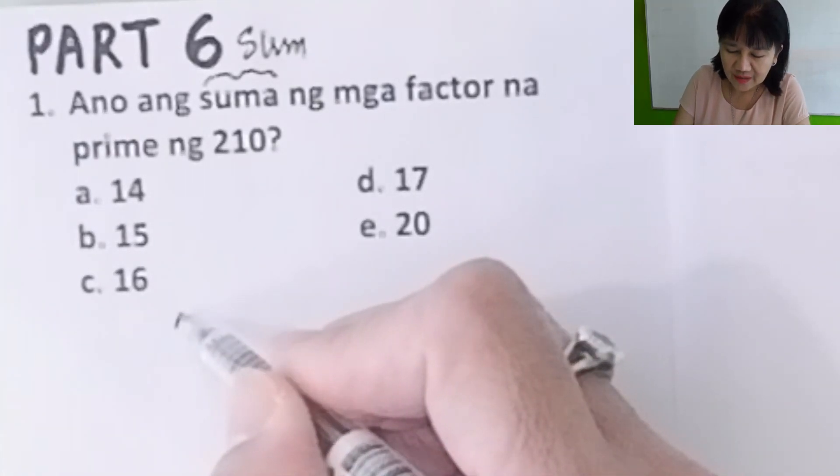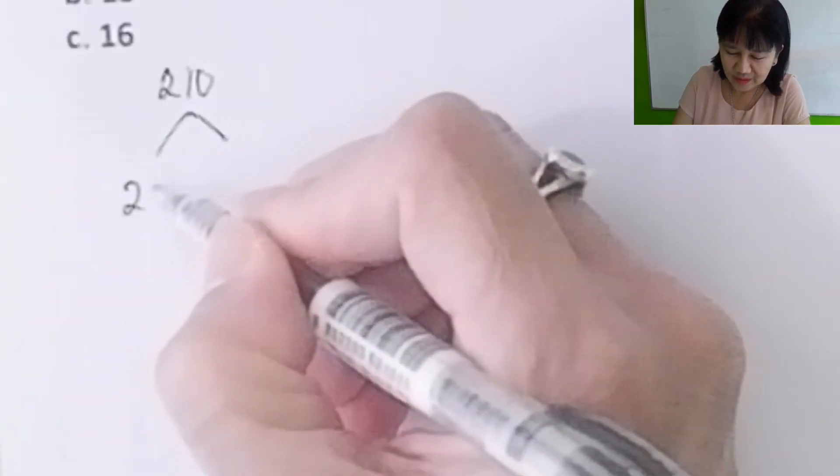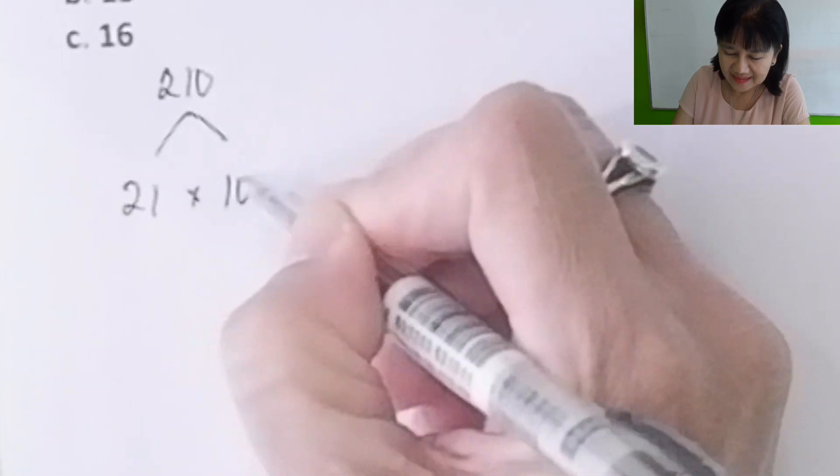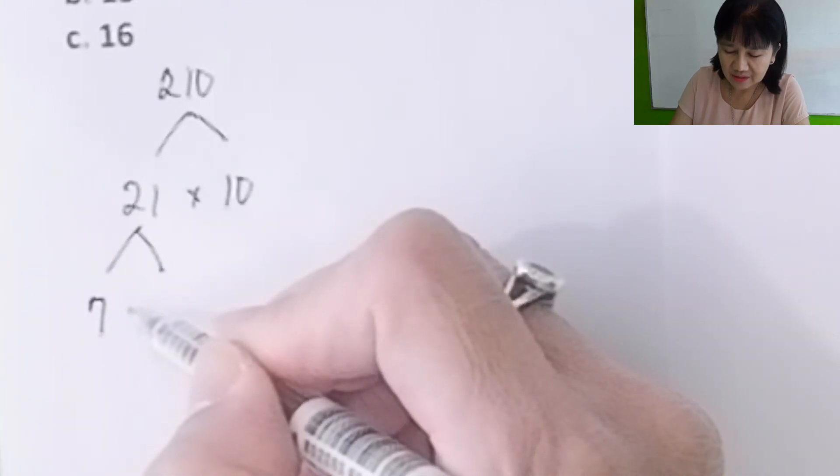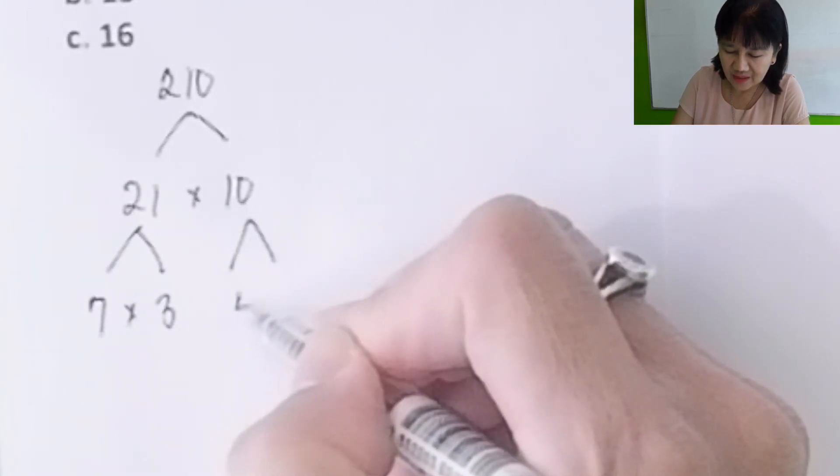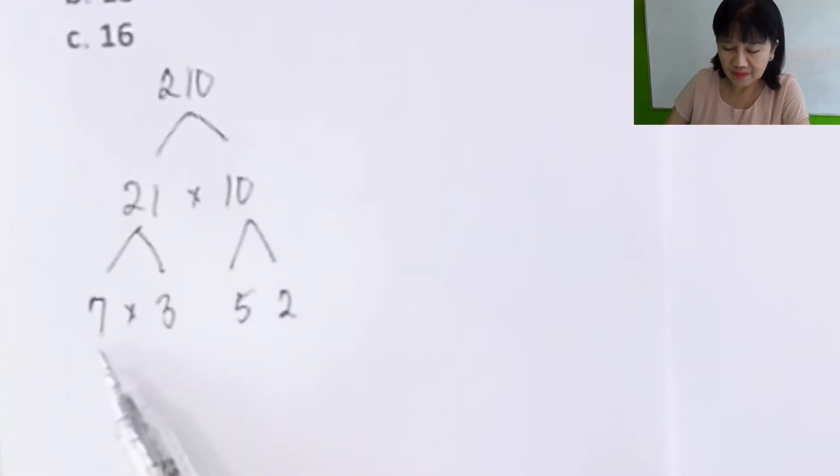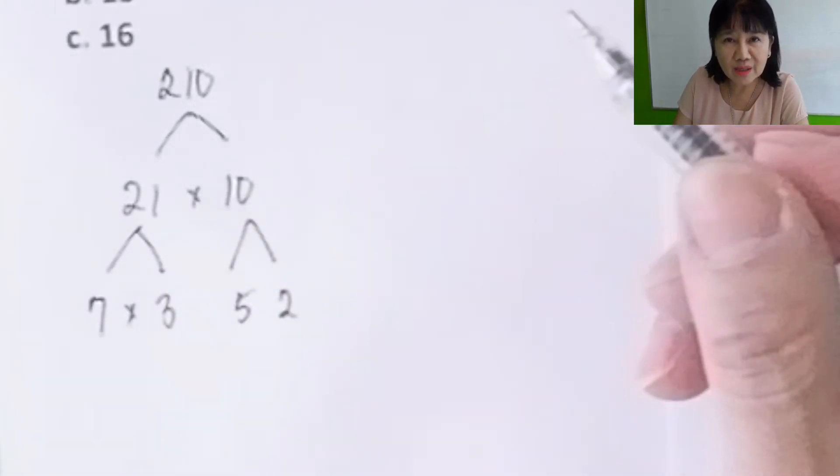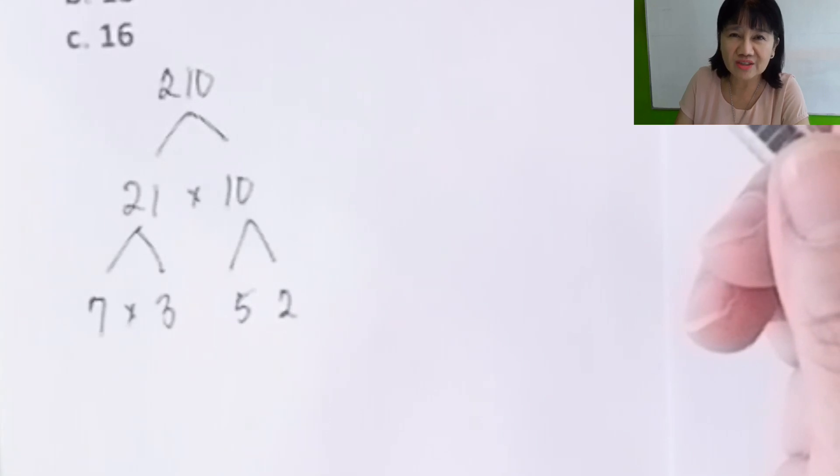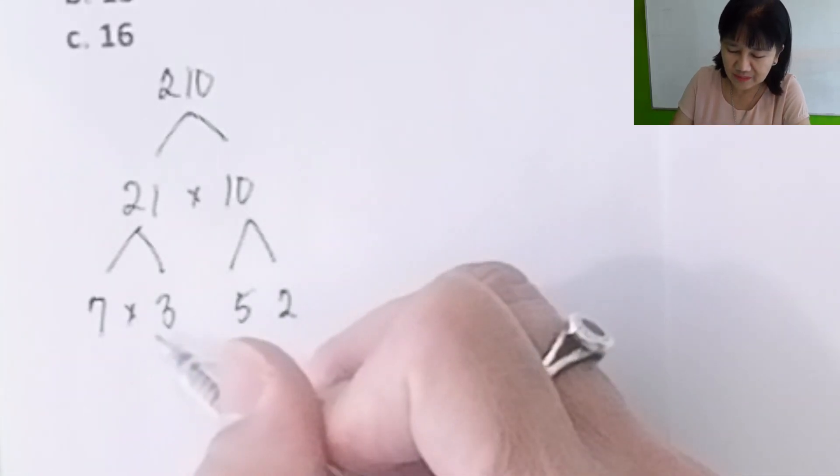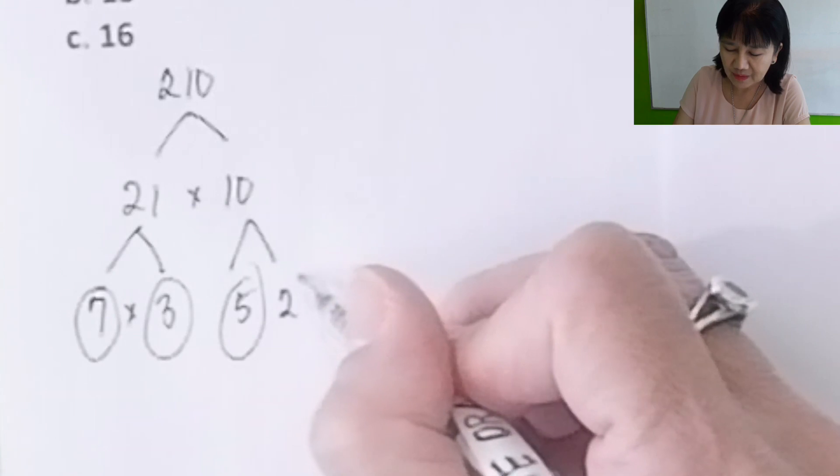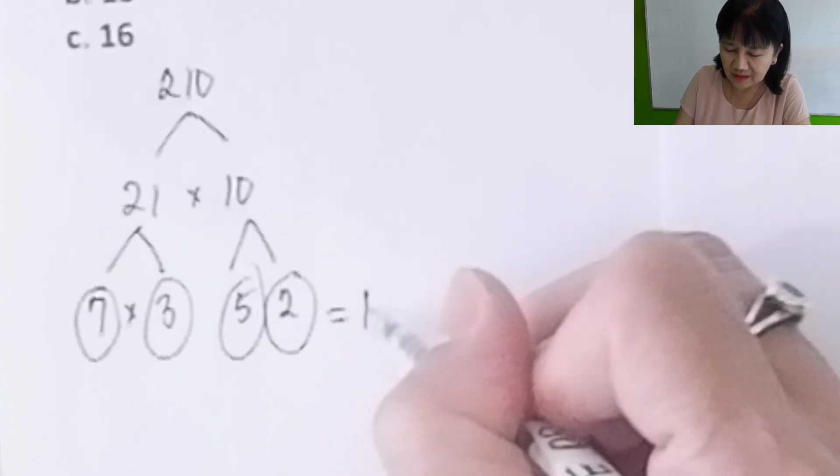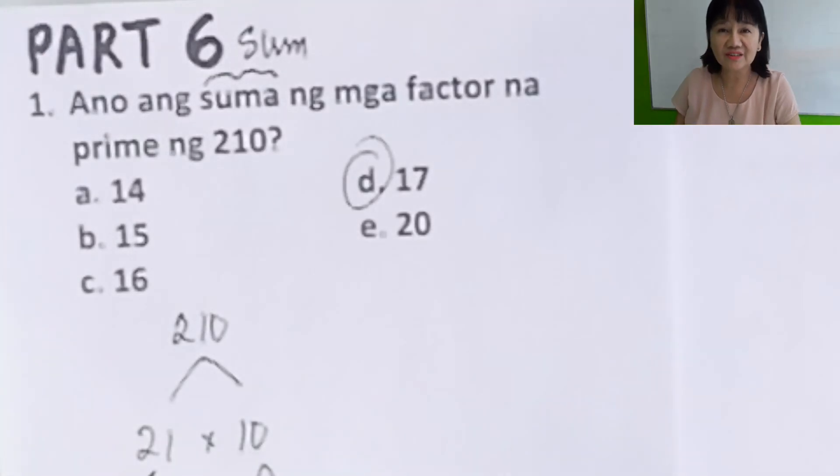We get the prime factors. 210 equals 21 times 10. But 21 is not prime because it has other factors like 7 and 3, 5 and 2, and then stop. Are these all prime? Yes. What is a prime number again? A number which has no other factors than itself and 1. You just add all of this: 7 plus 3 is 10, 10 plus 5 is 15, 15 plus 2 is 17. The correct answer is letter D.